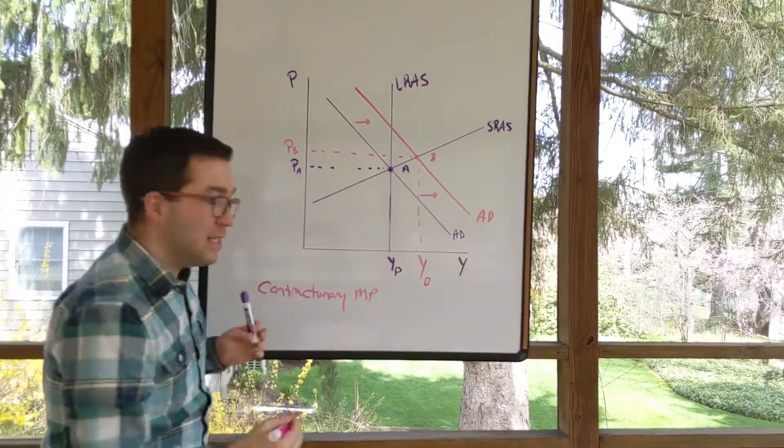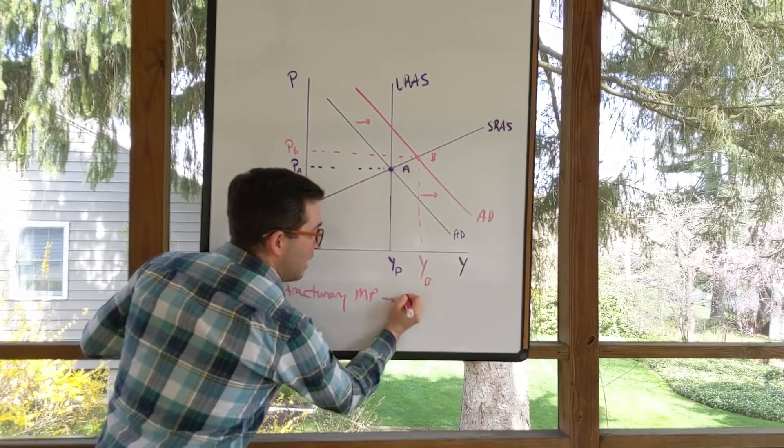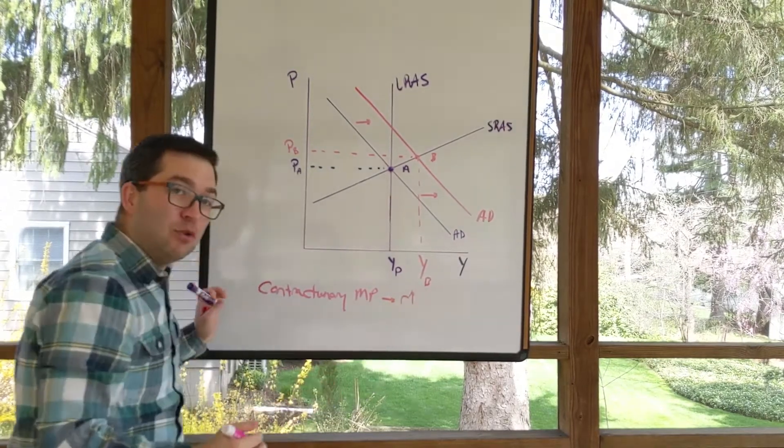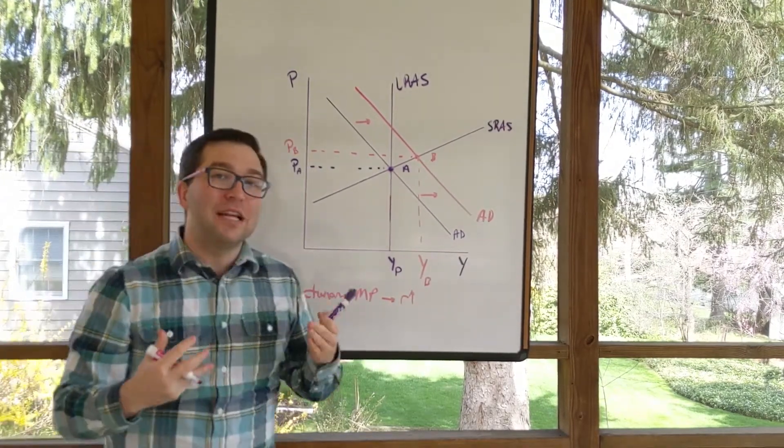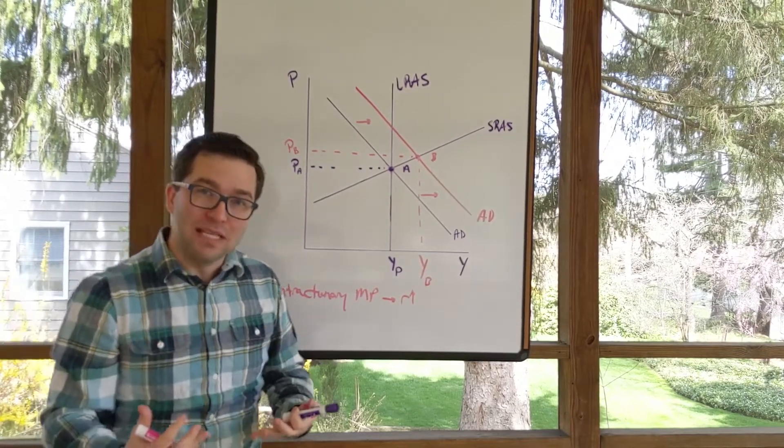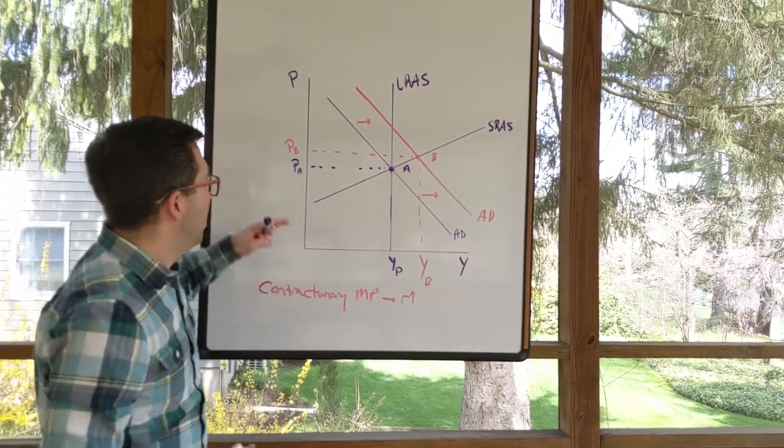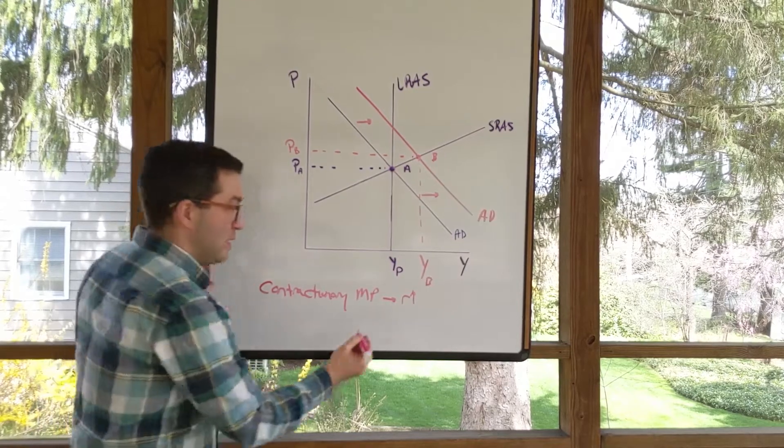And what that means is we're going to raise the interest rates. We're raising interest rates because prices are starting to get a little higher than what we want. Remember, we need to stabilize prices as part of the dual mandate. So we're going to raise interest rates.